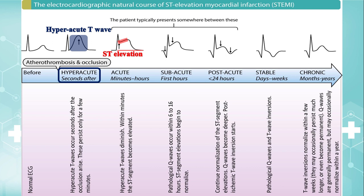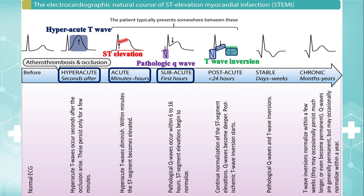Elevation of ST segment happens within minutes to hours after coronary artery occlusion. If the patient remains untreated, pathological Q waves develop within 6 to 16 hours, and ST elevations begin to normalize. Gradual return of ST elevations to baseline is associated with T wave inversion development — these T wave inversions are so-called post-ischemic. In summary, the triad of pathological Q wave, ST elevation, and T wave inversion is indicative of the post-acute phase of ST elevation myocardial infarction.